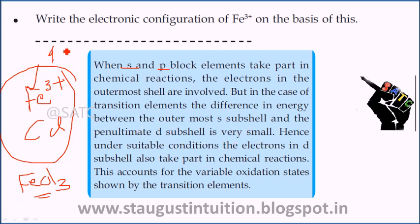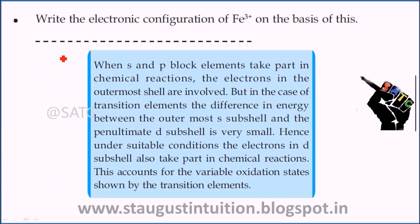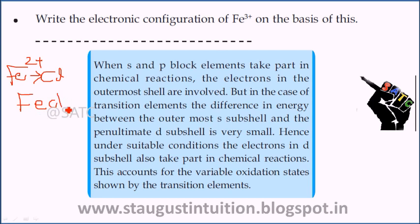The outermost electrons are in 3d. The electrons in the D sub-shell also take part in forming compounds. Fe2+ forms MeCl2 (FeCl2). FeCl2 shows Fe in the +2 oxidation state and FeCl3 shows Fe in the +3 oxidation state.